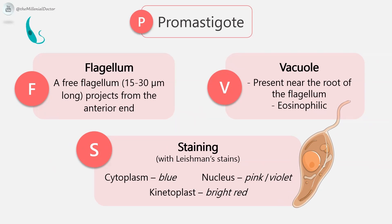The promastigote has a free flagellum 15 to 30 micrometers in length — the same length as the body or even longer — projecting from the anterior end. The flagellum extends anteriorly without curving back on the body, and there is no undulating membrane. A vacuole is present near the root of the flagellum — an eosinophilic, light-staining area in front of the kinetoplast. When stained with Leishman stain, the cytoplasm appears blue, the nucleus appears pink or violet, and the kinetoplast appears bright red.